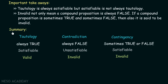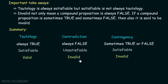Here is the summary of this lecture. Tautology means always true. Contradiction means always false. Contingency means sometimes true or sometimes false. Tautology and contingency are both satisfiable, while contradiction is always unsatisfiable. Tautology is always valid, whereas contradiction and contingency are both invalid.